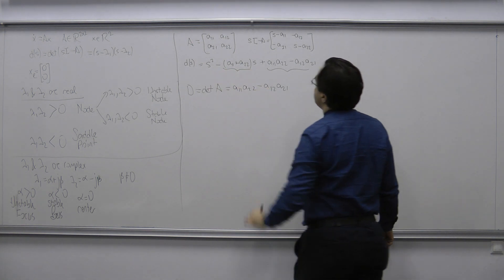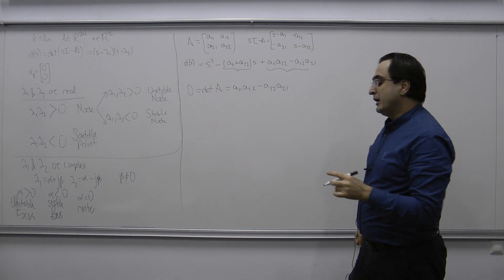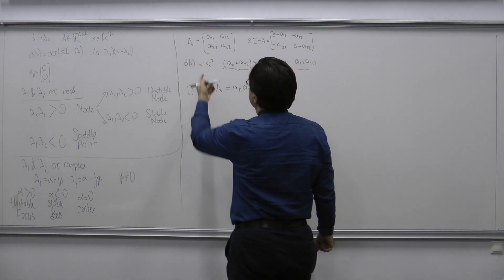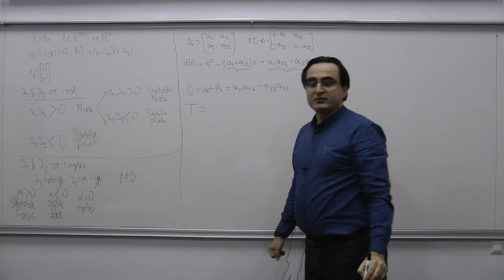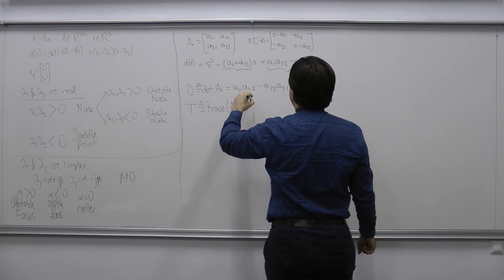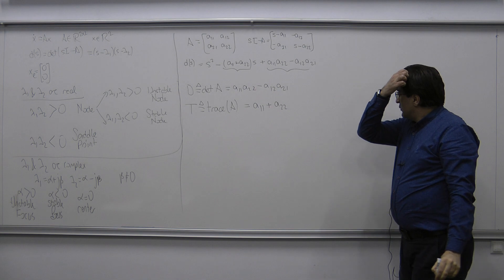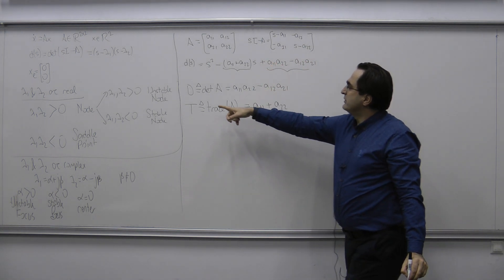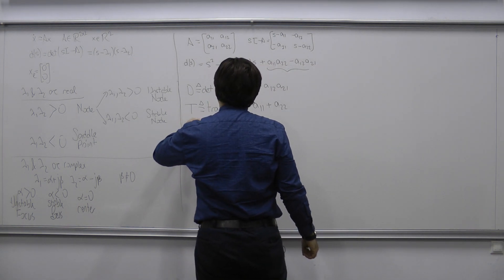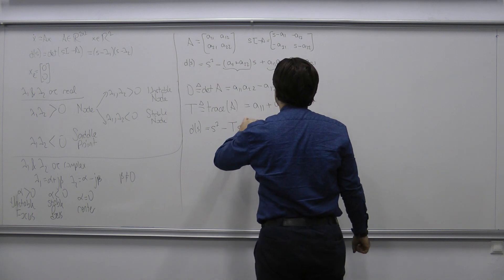The trace T is defined as the sum of diagonal elements of a square matrix; in the 2×2 case T = A₁₁ + A₂₂. So D(s) = s² − Ts + D, where D = det(A). Factoring into eigenvalues gives D(s) = (s − λ₁)(s − λ₂) = s² − (λ₁ + λ₂)s + λ₁λ₂. Matching coefficients shows that T = λ₁ + λ₂ and D = λ₁λ₂.